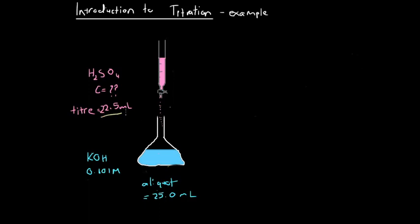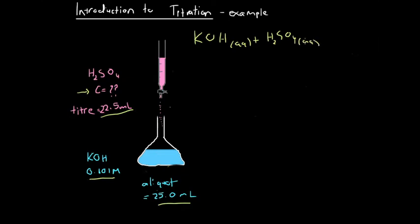Now we're going to use this volume, this volume, and this concentration to work out the concentration of the sulfuric acid. First, we need to write out the chemical equation for this reaction. We've got a classical acid-base reaction: potassium hydroxide and sulfuric acid. Because it's an acid and a base — not a carbonate, just a regular base — we're going to produce a salt. This salt is potassium sulfate and water, as always happens when we react an acid with a base.